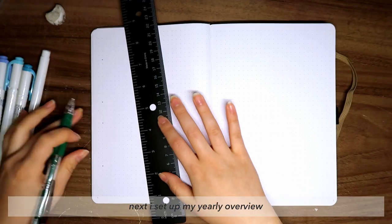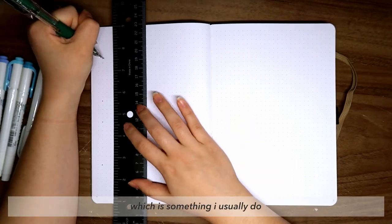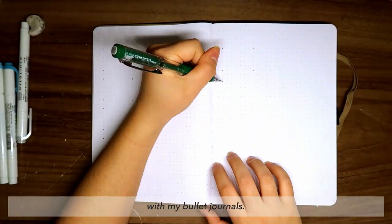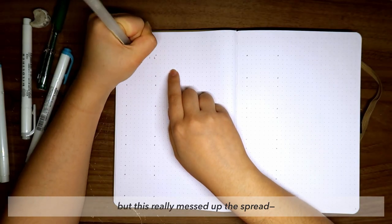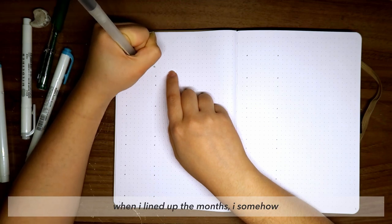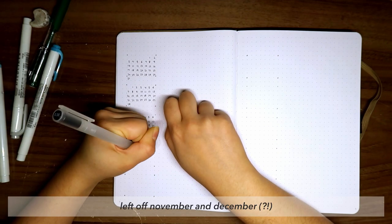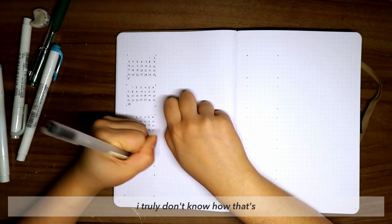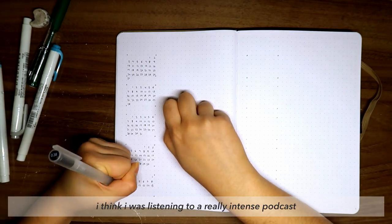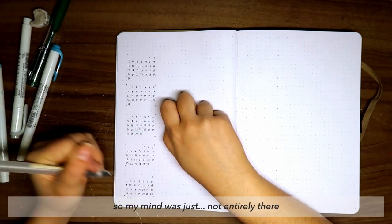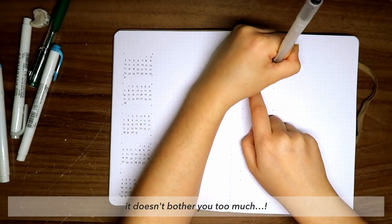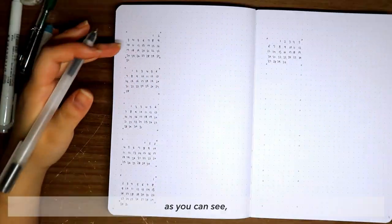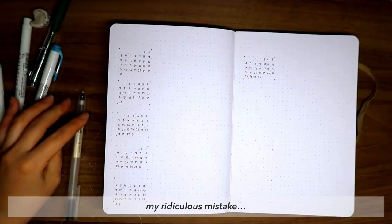Next, I set up my yearly overview with all the months, which is something I usually do with my bullet journals. However, I wanted to try something new by adding spaces for notes next to each month. But this really messed up the spread. When I lined up the months, I somehow left off November and December. I truly don't know how that's even possible. I think I was listening to a really intense podcast, so my mind was just not entirely there. Please forgive me and pretend it doesn't bother you too much. As you can see, this is the moment when I realized my ridiculous mistake.